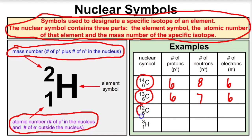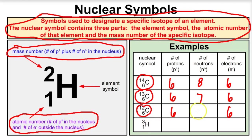Let's look at this one. The atomic number is six, so there are six protons inside of the nucleus and six electrons outside of the nucleus. The mass number is 12 minus the atomic number, which is six, and we end up with six neutrons inside the nucleus.